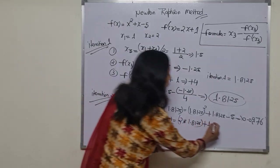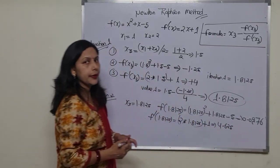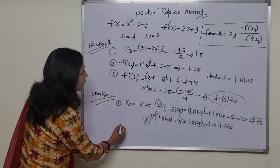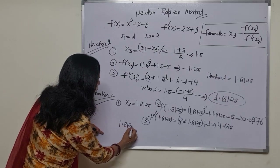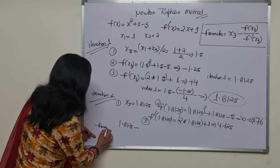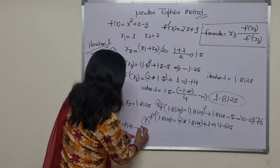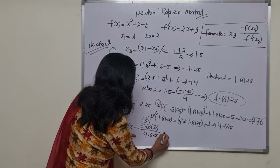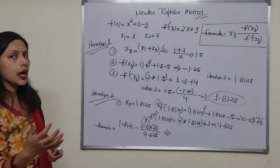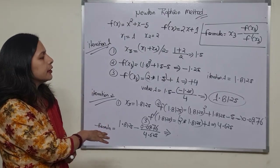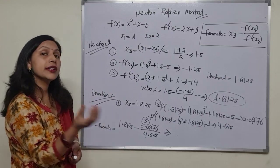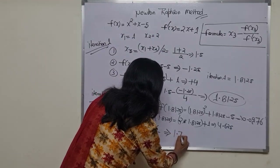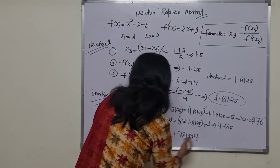That gives us f'(x3) equals 4.625. Now we have all the values. The formula gives us: 1.8125 minus 0.0976 divided by 4.625. Solving with a calculator, we get the root for the second iteration, which is 1.791394.